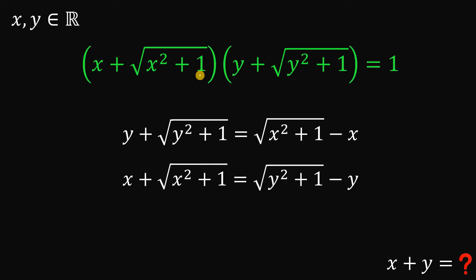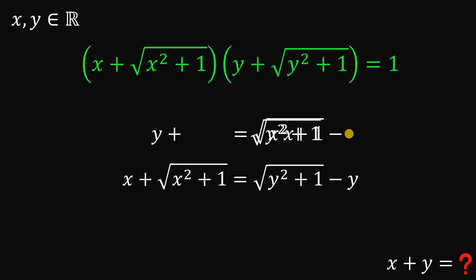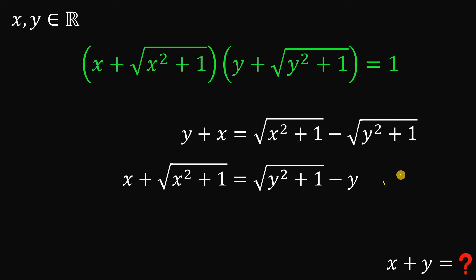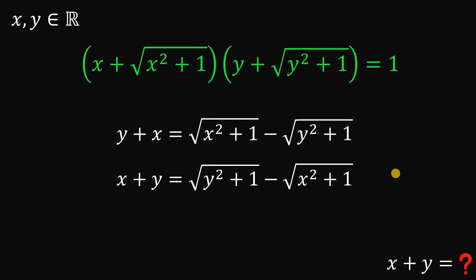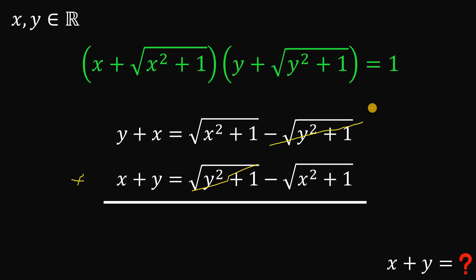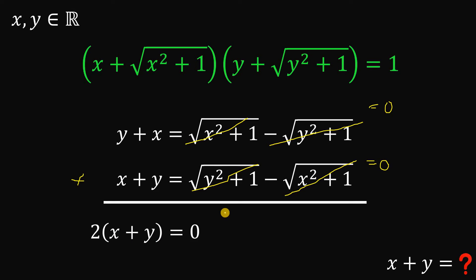Using these two results, we can now solve for x plus y. In the first equation, let's rearrange some terms. We do the same for the second equation. Now, if we add these two equations, notice we have positive square root of y squared plus 1 and negative square root of y squared plus 1 — those cancel to 0. Similarly, positive square root of x squared plus 1 and negative square root of x squared plus 1 also cancel to 0. So the result is 2 times the quantity x plus y equals 0.